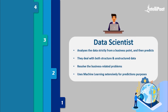Coming to the next job title — the data scientist. A data scientist is a professional who analyzes data strictly from a business point of view and is responsible for delivering predictions that aid in business value, dealing with both structured and unstructured data. The job of a data scientist does not end there — they are also expected to identify the right areas of data where they can find relevant patterns to help in case any business-related problem arises.